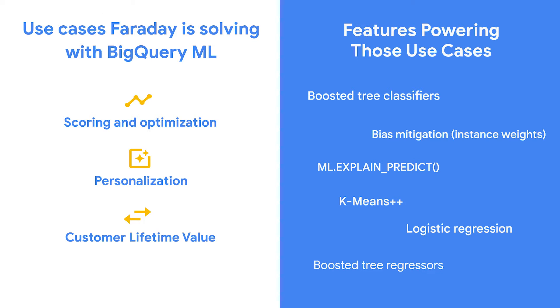Whoa. So when I order a Bark Box for my dog, you're behind that? How do you implement this today? Right now, we use a lot of BigQuery ML's industry-leading predictive AI suite — everything from classifier models that tell you the probability of something happening, to regression models which help us tell how much somebody is going to spend, and unsupervised learning models like k-means to help with personalization segmentation.